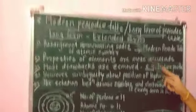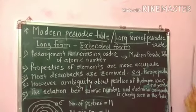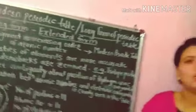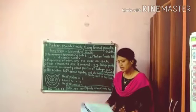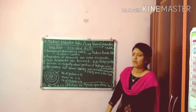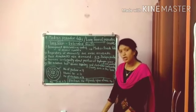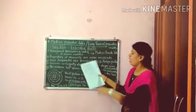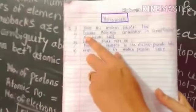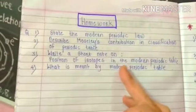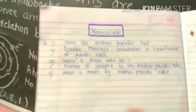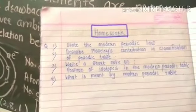This is the modern periodic table, also called the long form of the periodic table. In the next lecture, we will learn about the structure of this modern periodic table. Practice questions include: state the modern periodic law; describe Moseley's contribution in the classification of the periodic table; write a short note on the position of isotopes in the modern periodic table; and what is meant by the modern periodic table?